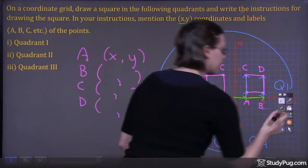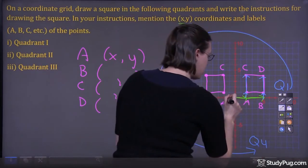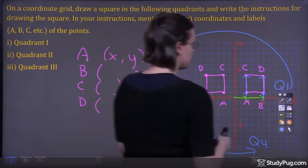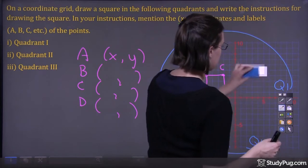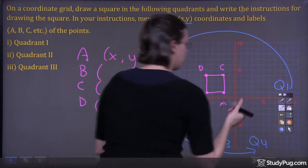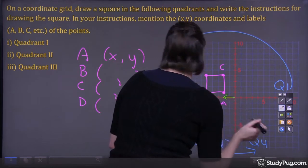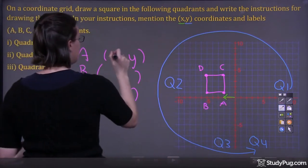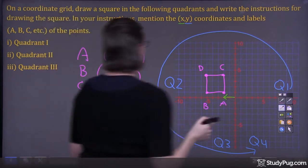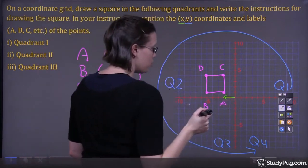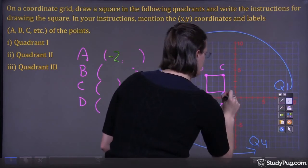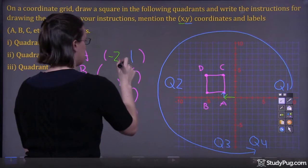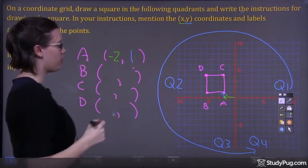Let's first focus on point A. We're moving to the left two points, so we're going to have negative 2 for X. And we're moving up one point, so we're going to have positive 1 for Y. So negative 2, positive 1 — those are the coordinates for A.